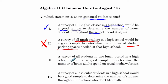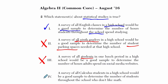Choice three says a survey of all students in one lunch period in a high school would be a good sample to determine the number of hours adults spend on social media websites. That doesn't make sense. Even though many students may know about adult behavior on social media, they're not representative of that group. You want your survey members to represent the group you're trying to find information about. This would have been reasonable if it was a random lunch period to find out something about students, but these students are not representative of adults.